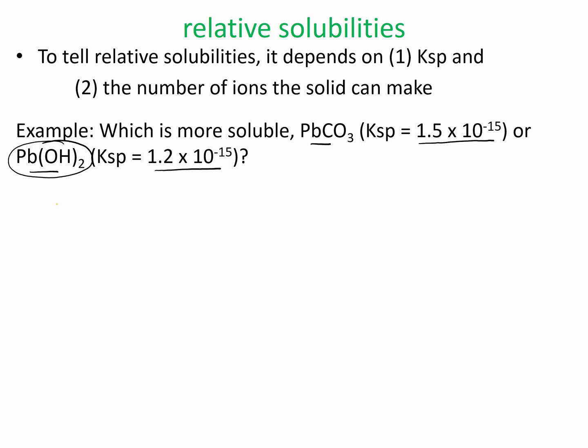So first I'll do PbCO3. So we have our lead and our carbonate here. And dash out the solid, 0, 0, X, X, X, X. So the solubility then is going to be X squared equals the Ksp, so 1.5 times 10 to the negative 15th.